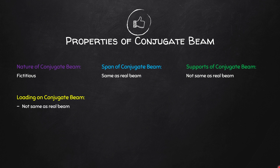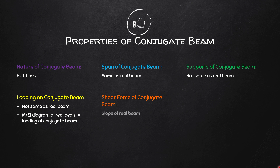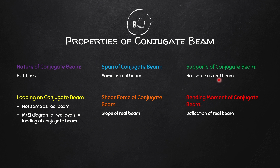Fourth: the loading is not the same as the real beam — in fact, the M/EI diagram of the real beam is the loading of the conjugate beam. Fifth: the shear force of the conjugate beam gives us the slope of the real beam. And lastly, sixth: the bending moment of the conjugate beam gives us the deflection of the real beam. If you remember these six properties, you can write the definition of conjugate beam.